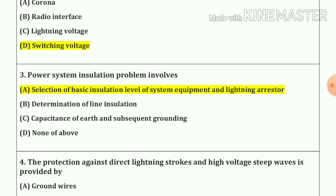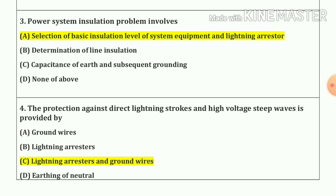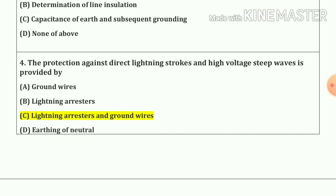Question 3. Power system equipment insulation problems involve selection of the basic insulation level of system equipment and lightning arrester.